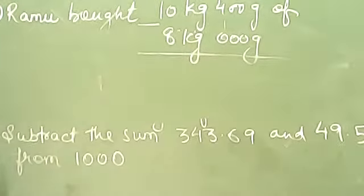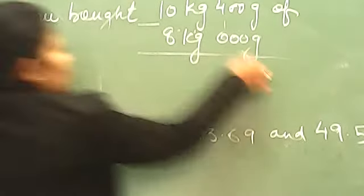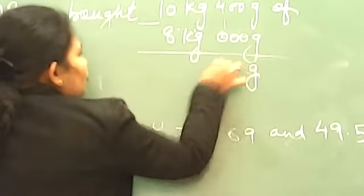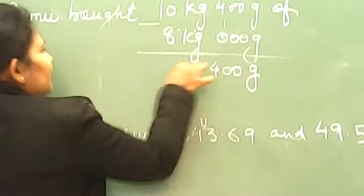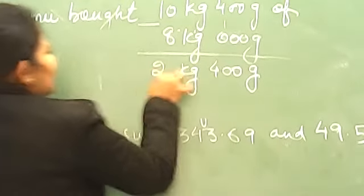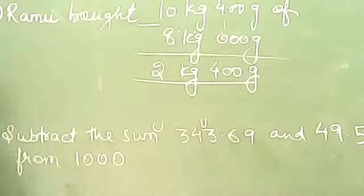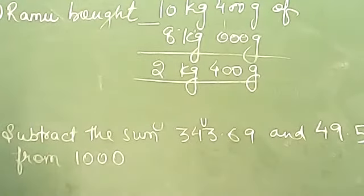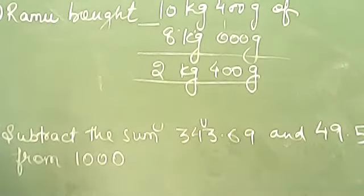Simply subtraction you will do. What you will have? That is 400 grams, and this is 2 kg. 2 kg 400 grams is the answer. If it is right, give yourself 5 marks.